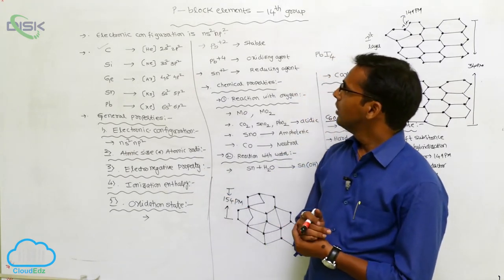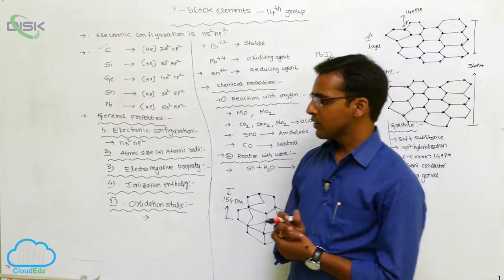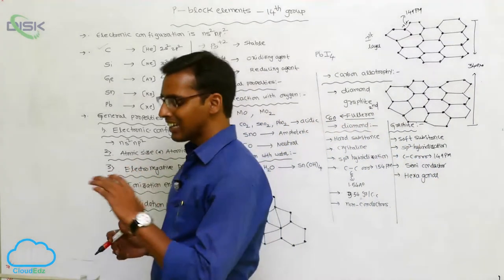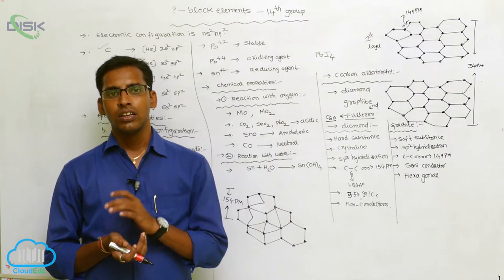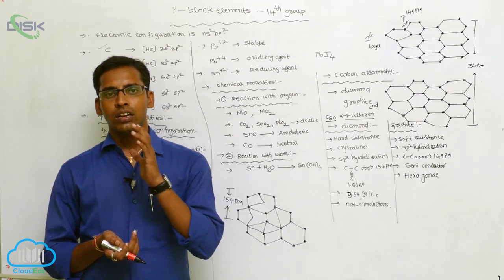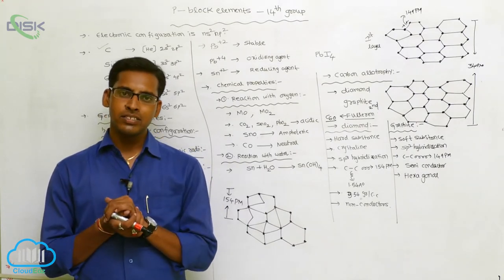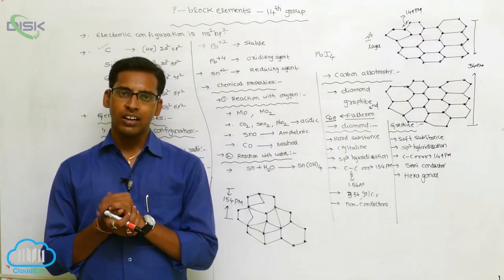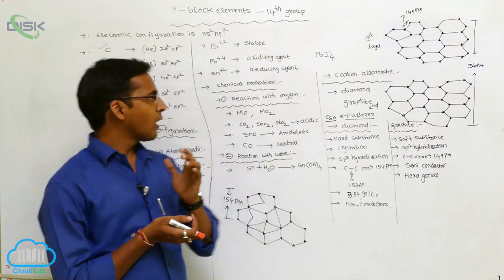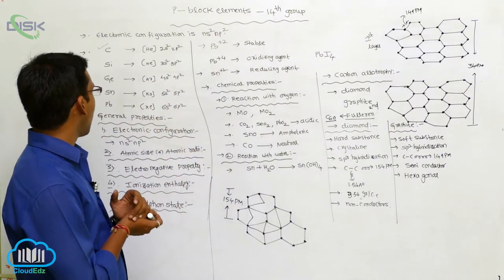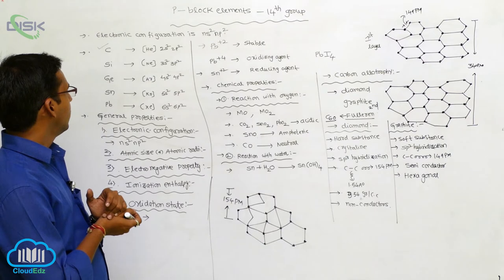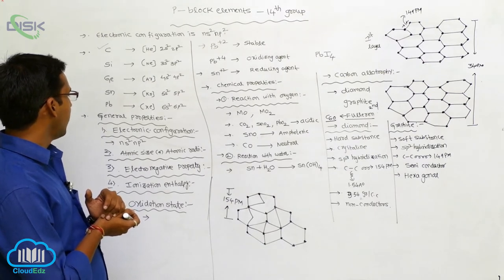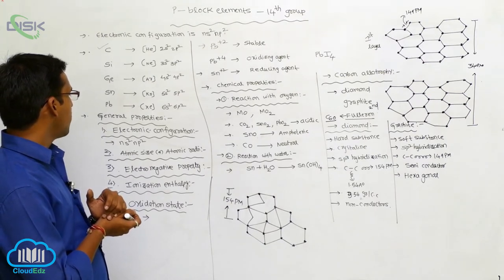The general characteristics of Group 4A elements: carbon and silicon are non-metals, germanium is a metalloid, and tin and lead are metals.